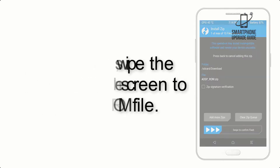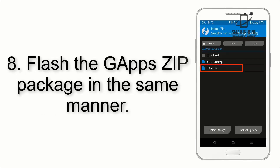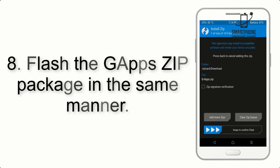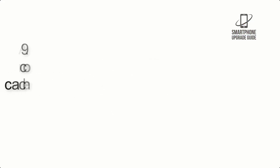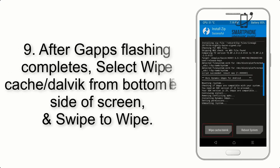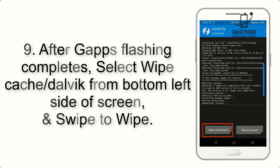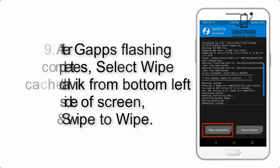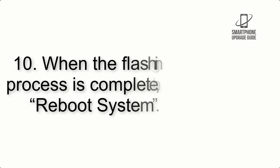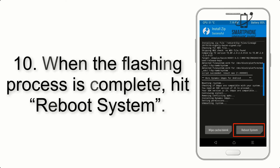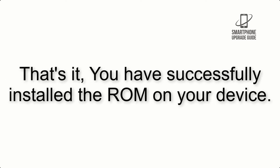Step 8: Flash the GApps zip package in the same manner. Step 9: After GApps flashing completes, select Wipe Cache and Dalvik from the bottom left side of the screen and swipe to wipe. Step 10: When the flashing process is complete, hit Reboot System. That's it — you have successfully installed the ROM on your device.